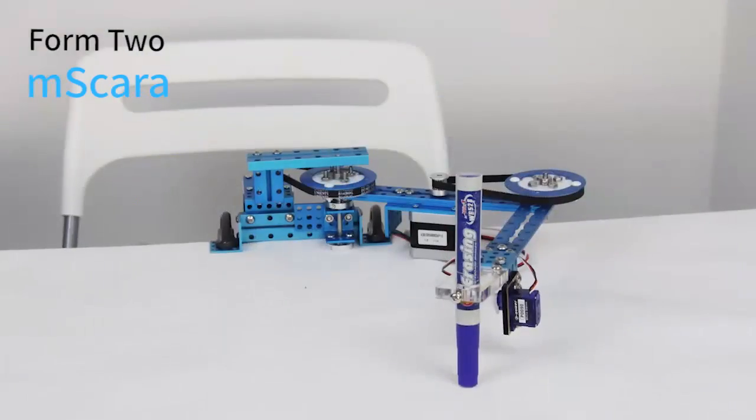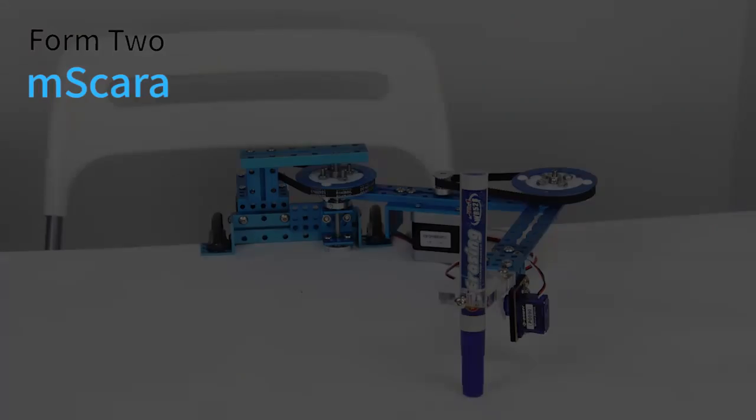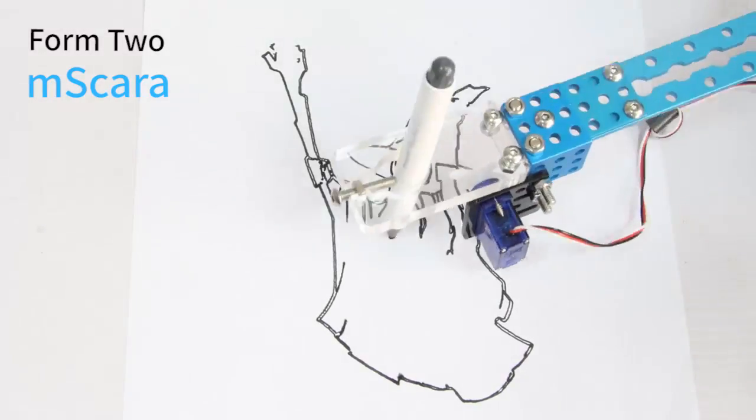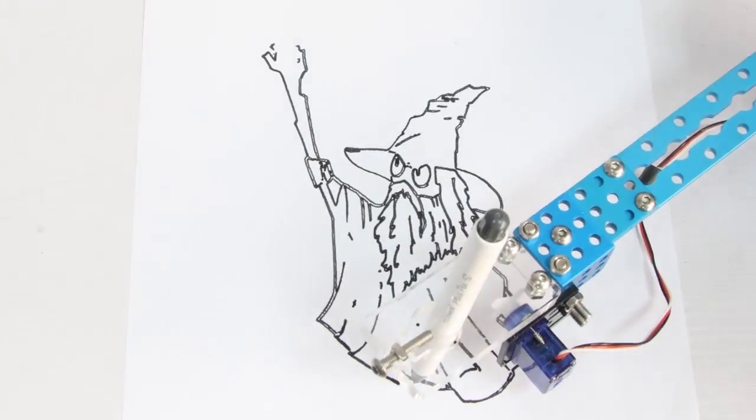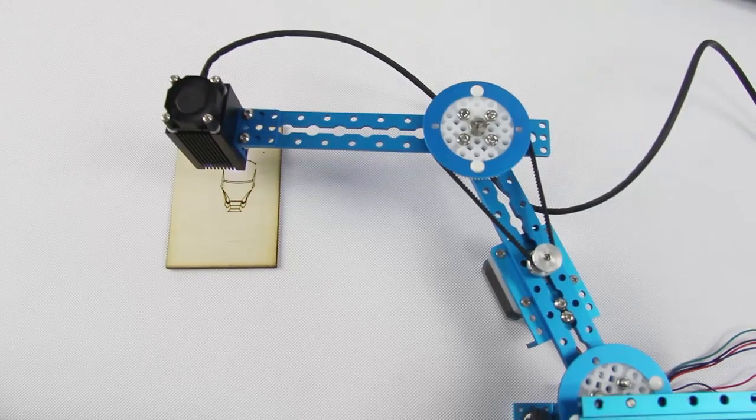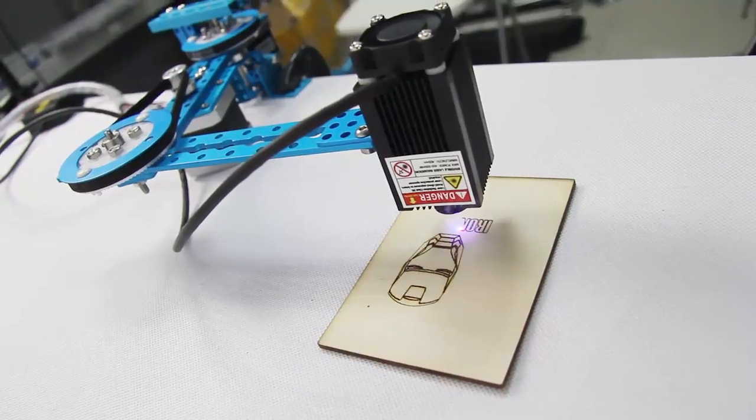Form 2 is M-Scarra. You have seen that before? M-Scarra could draw wonderful painting on the paper. And if you put a laser diode instead of a pen, it could even become a laser engraver.